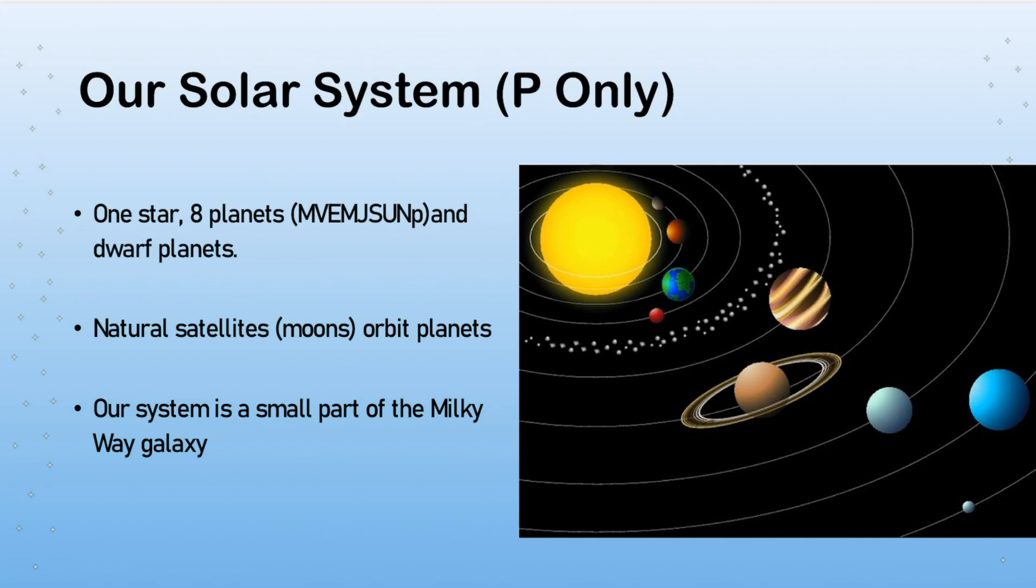We also have things called natural satellites. So orbiting the Earth we have artificial satellites, but we also have our little moon which is this natural satellite. Other planets have natural satellites too, and they orbit planets. So planets orbit stars, natural satellites or moons orbit planets. Our solar system is a small part of a very large Milky Way galaxy which has something in the order of a hundred billion stars in it.